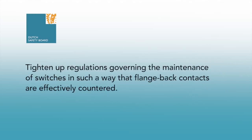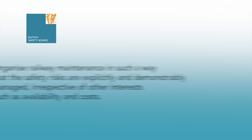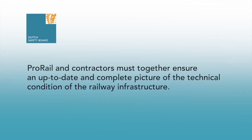On the basis of its investigations, the Dutch Safety Board has issued the following recommendations. Tighten up regulations governing the maintenance of switches in such a way that flangeback contacts are effectively countered. Organise railway maintenance in such a way that the safety risks are explicitly and demonstrably managed, irrespective of other interests such as availability and costs. Ensure that relevant information is available to the various chain partners, and encourage active knowledge sharing on incidents. ProRail and the maintenance contractors must together ensure an up-to-date and complete picture of the technical condition of the railway infrastructure.